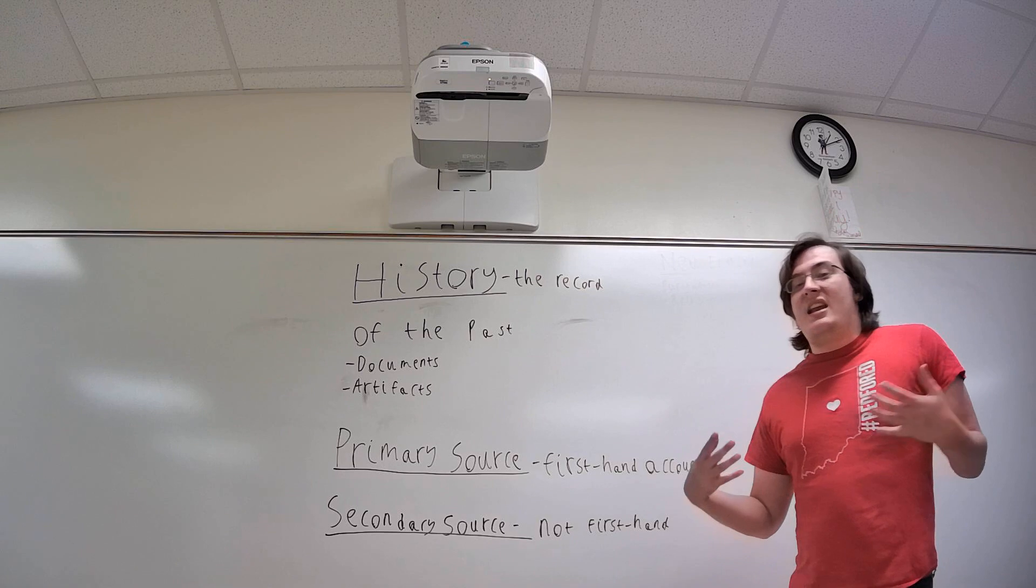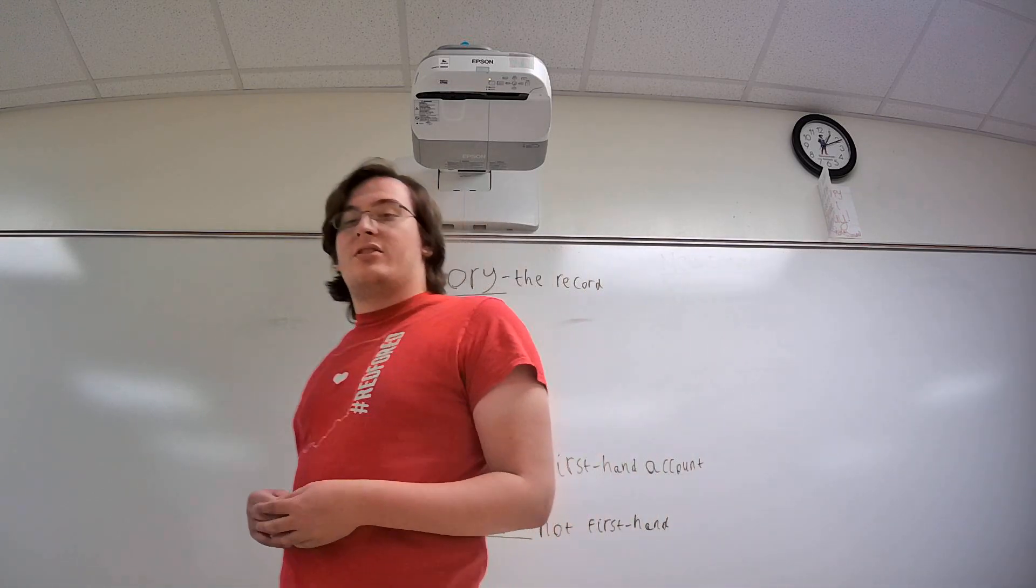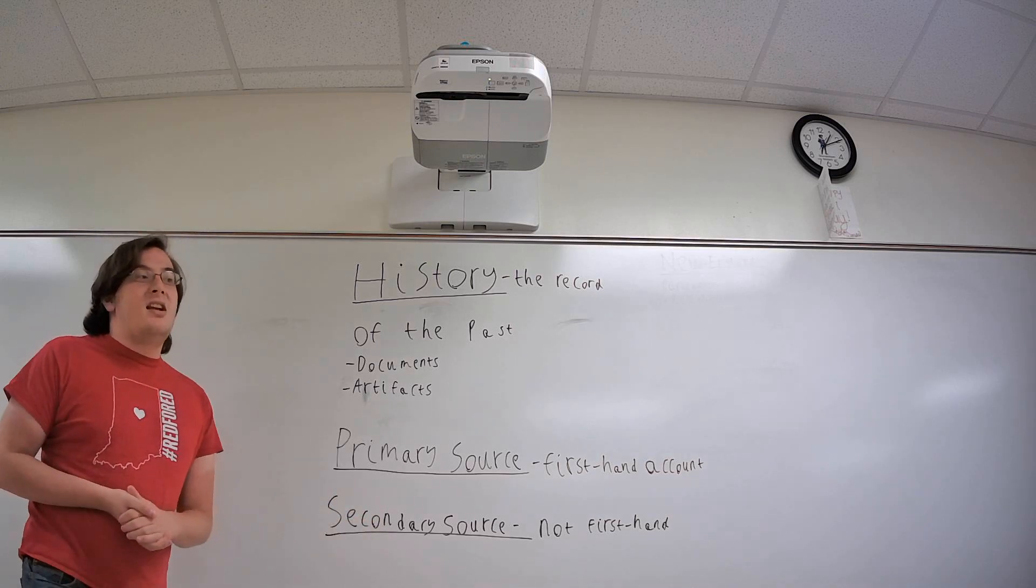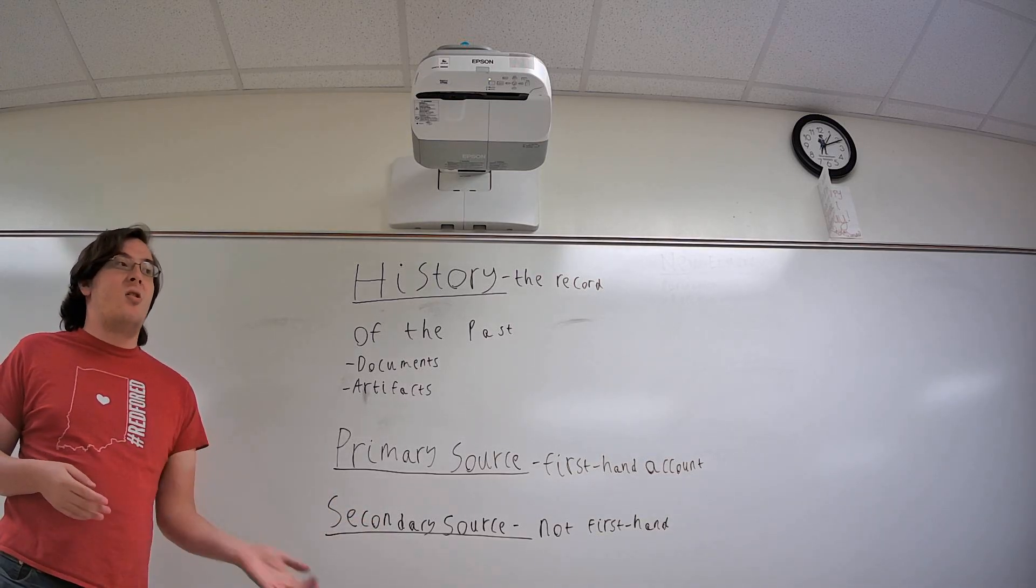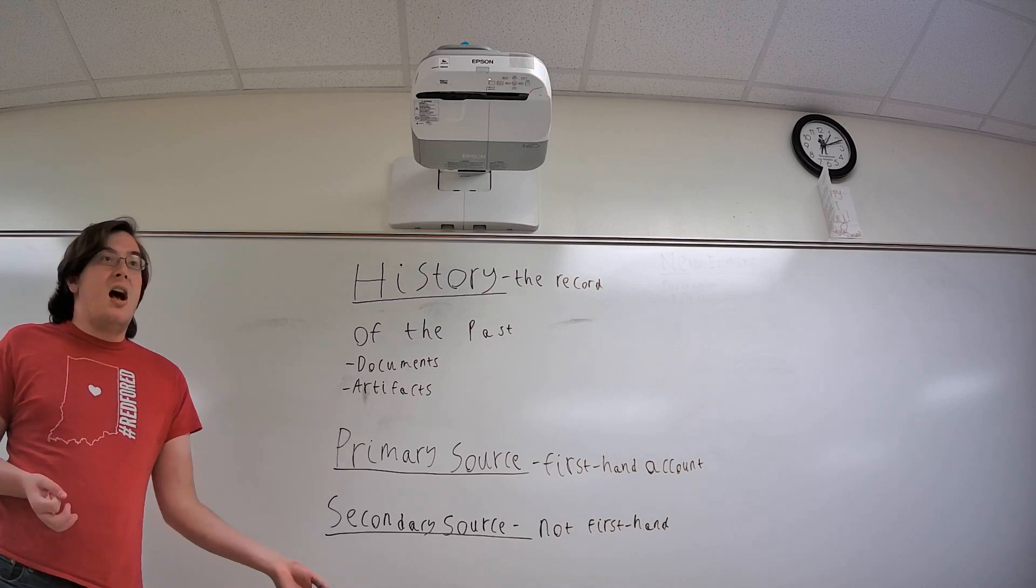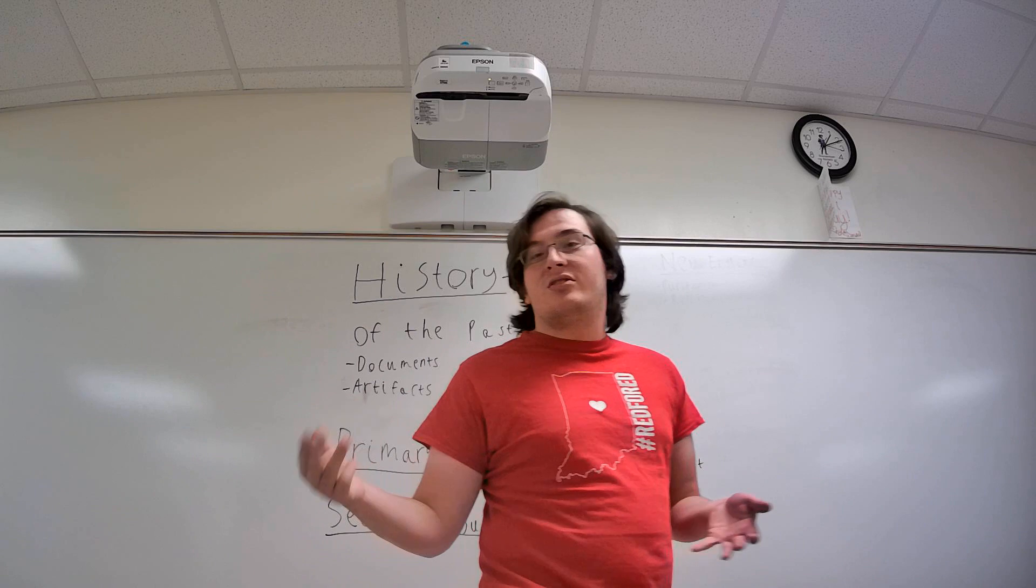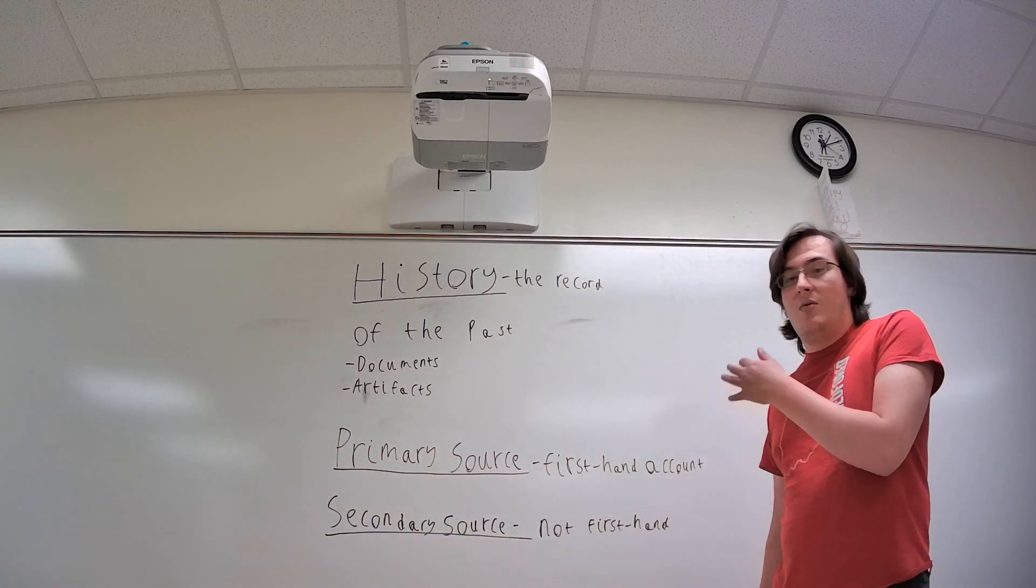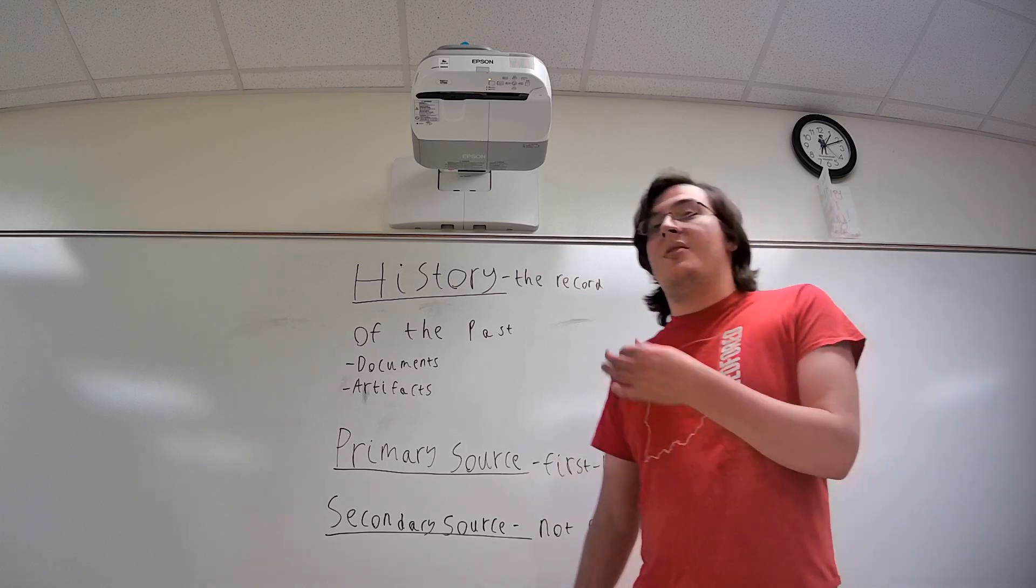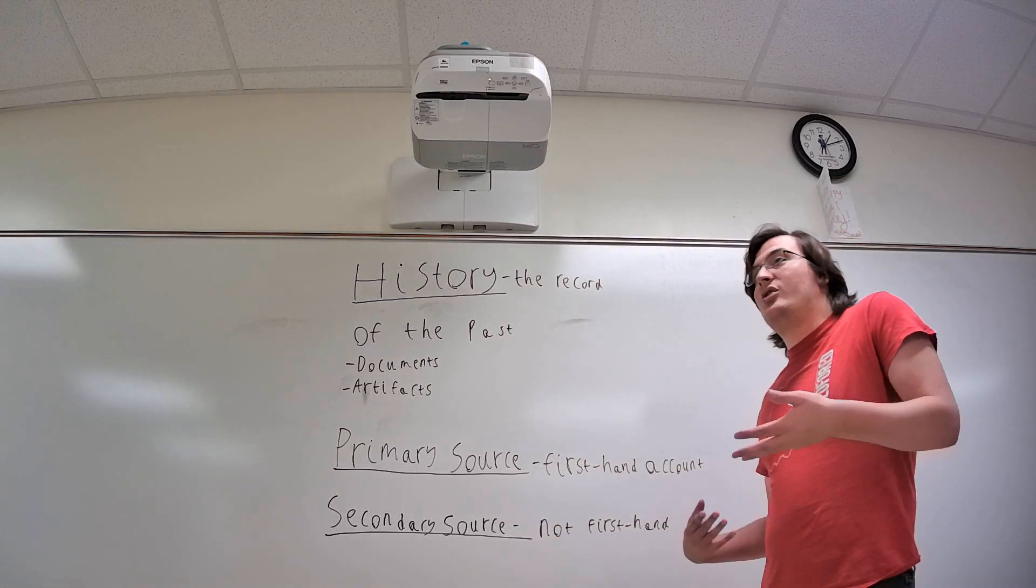But the bulk of what we're going to look at in this class are secondary sources. Secondary sources are not first-hand accounts. These would be things like textbooks or books written by historians talking about the past. These would also be things like articles in newspapers or scholarly journals talking about the past. These would be written by people that did not directly experience the event in question.